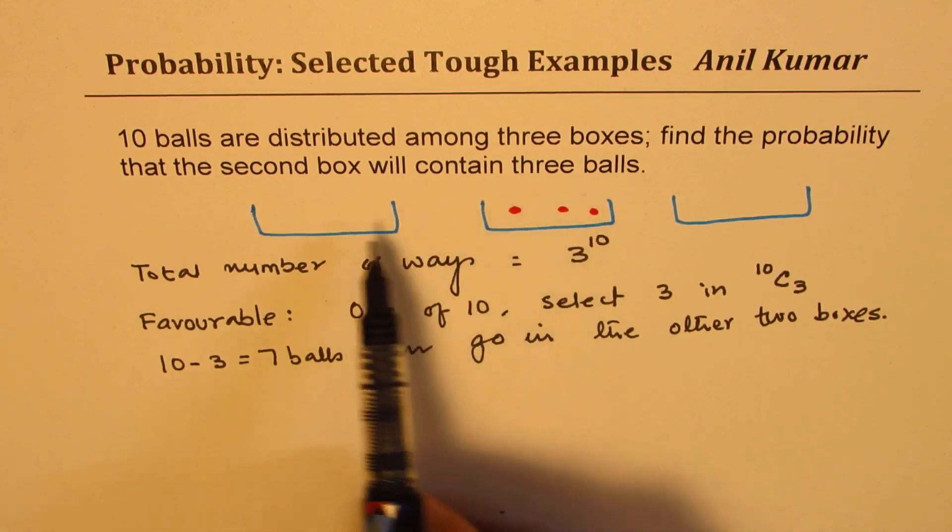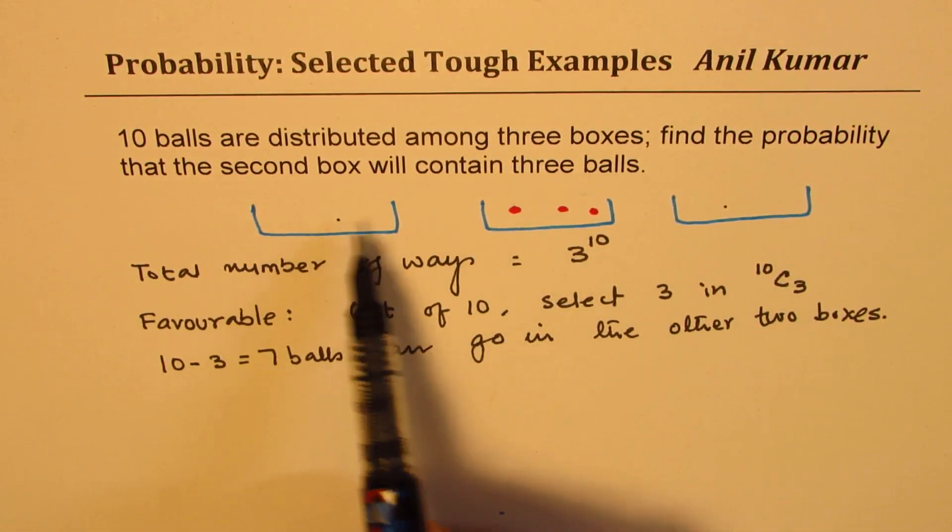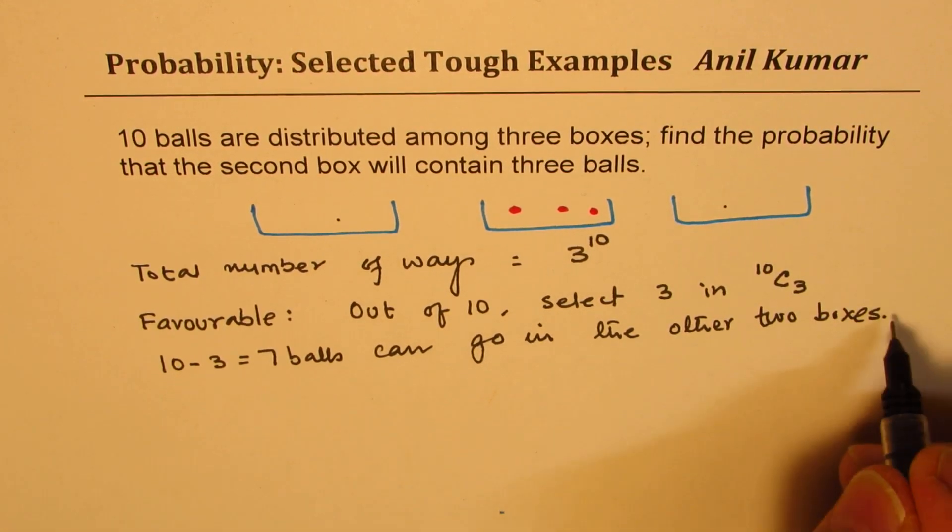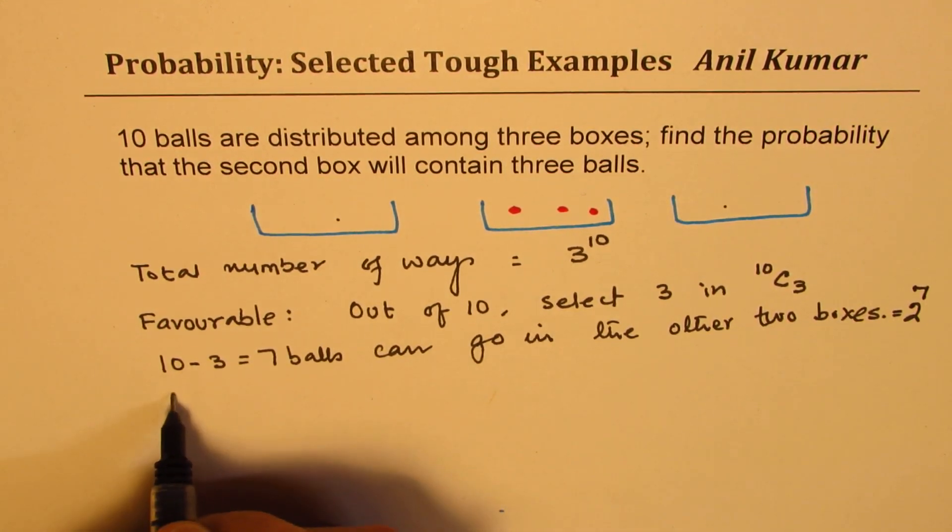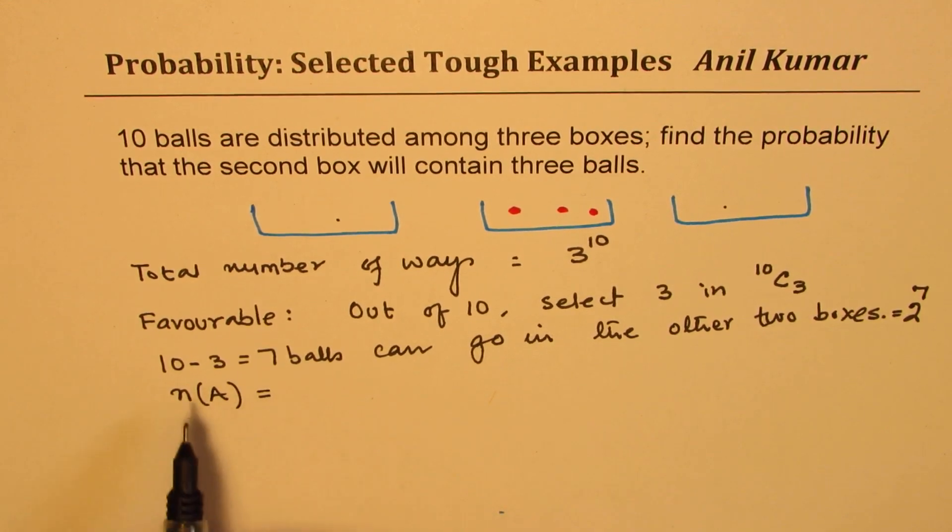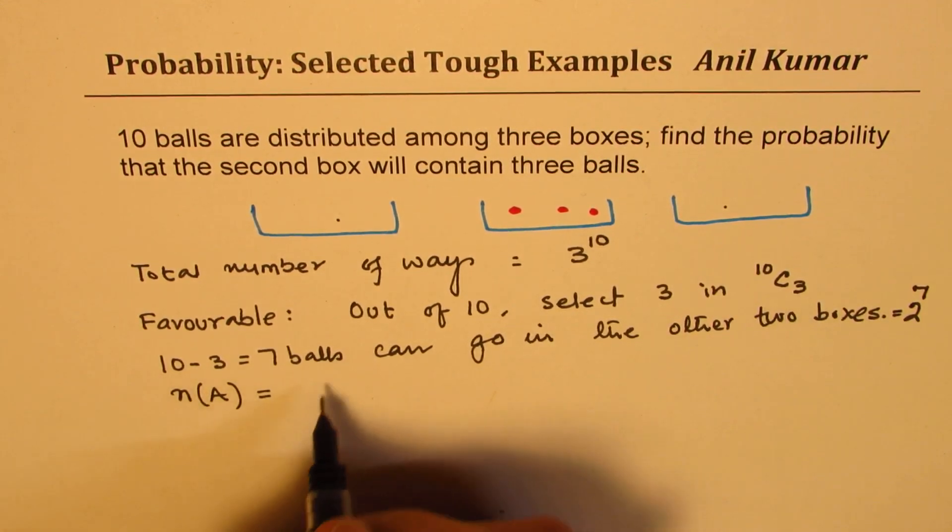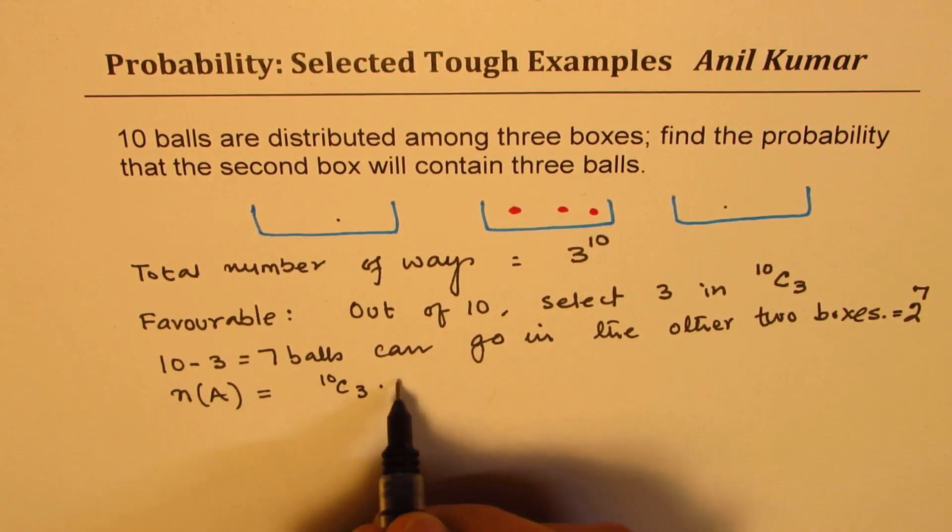When you select these 3, 7 will go here. We have got 2 boxes and 7 balls. So, this is equal to 2 to the power of 7. So, the total favourable cases, let's say our event is A, the favourable cases for us will be 10C3 times 2 to the power of 7.